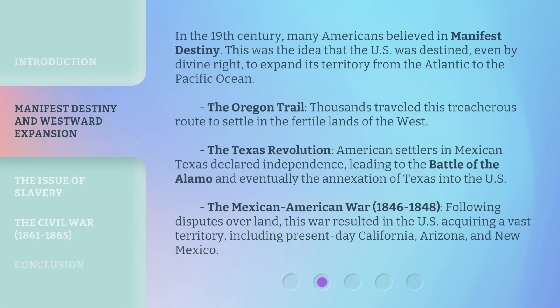In the 19th century, many Americans believed in Manifest Destiny. This was the idea that the U.S. was destined, even by divine right, to expand its territory from the Atlantic to the Pacific Ocean. The Oregon Trail: thousands traveled this treacherous route to settle in the fertile lands of the West.